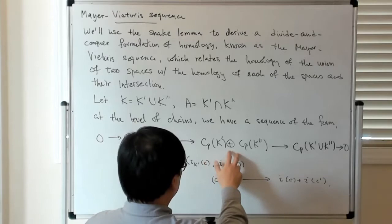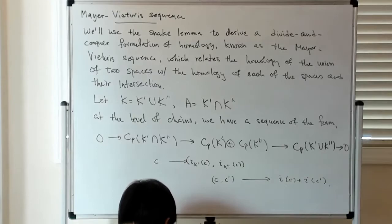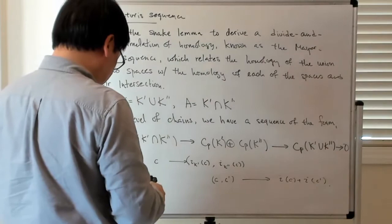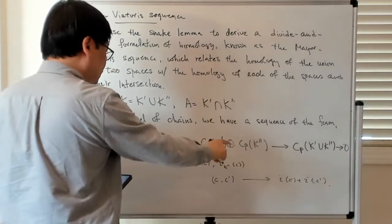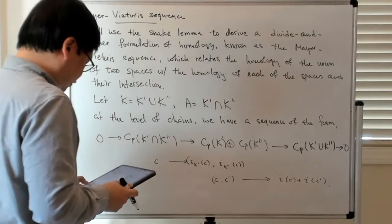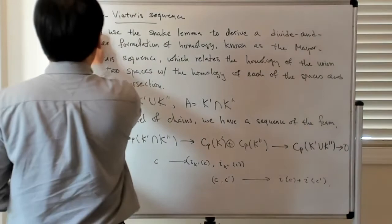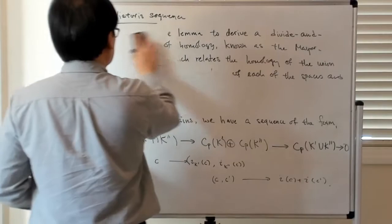And also fairly easy to convince yourself that it is exact at this point here. So in any case, this is the short exact sequence at the level of the chain groups which is going to induce the Mayer-Vietoris sequence. So let me then perhaps state it formally.